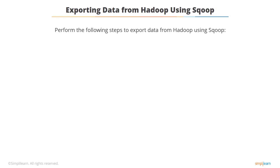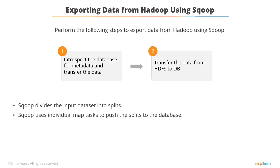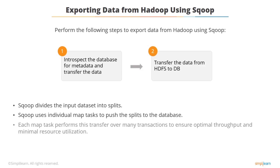To export data from Hadoop using Sqoop, perform the following steps. First, introspect the database for metadata and transfer the data. Next, transfer the data from HDFS to the database. Further, Sqoop divides the input dataset into splits and uses individual map tasks to push the splits to the database. Each map task performs this transfer over many transactions to ensure optimal throughput and minimal resource utilization.